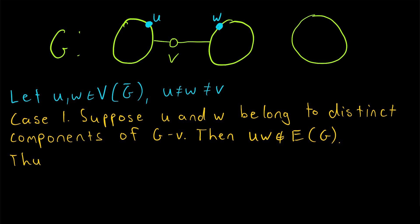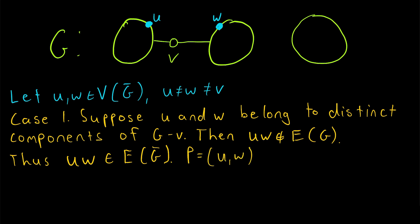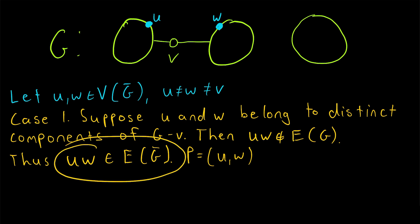By definition of complement graph, since U and W are not adjacent in G, they must be adjacent in G complement. So UW is an element of the edge set of G complement. Thus there is a path P going straight from U to W — a UW path that doesn't contain vertex V. So deleting V will not disconnect U and W in the complement of G.